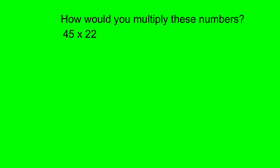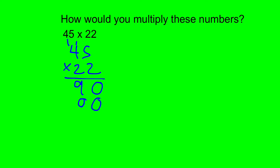Some of the things they did: some kids showed me the standard algorithm — we call it that — where you write the numbers like that and then you do 5 times 2 is 10, carry the 1, 4 times 2 is 8 plus that 1 is 9. Then you multiply through by this 2, but it's actually 20 so we write a zero down there. 2 times 5 is 10, write down zero carry the 1, and 2 times 4 is 8 plus 1 is 9. We add those up and we get 990. Many kids showed that — nothing wrong with that, excellent strategy. My personal opinion: kids often struggle with it, but good strategy.